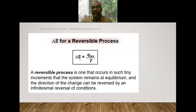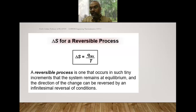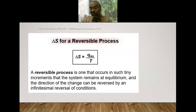For a reversible process, dS = δQ/T, and for a reversible adiabatic process this equals zero, so dS = 0 and S1 = S2. That is why an isentropic process is also known as a reversible adiabatic process. For a reversible adiabatic process, adiabatic means no heat transfer, so δQ = 0, δS = 0, and entropy remains the same — this is possible only in a reversible adiabatic process.